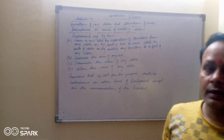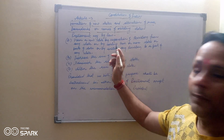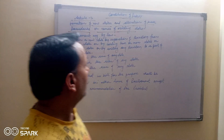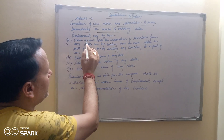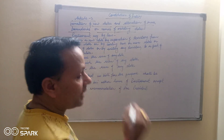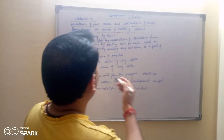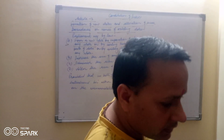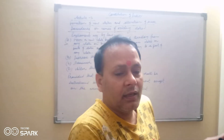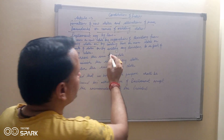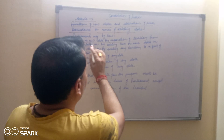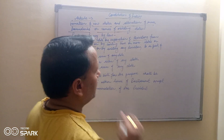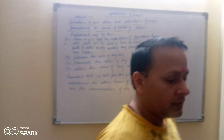Parliament is empowered to make all amendments in certain things. Parliament mein yeh load hai. In clause A, Parliament can form a new state — that means Parliament ek naya state bana sakti hai, by separation of territory from any state. Kisi existing state se separate karke ek alag state bana sakti hai. Koi naya state bana sakti hai.